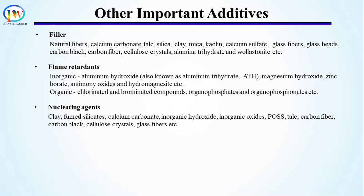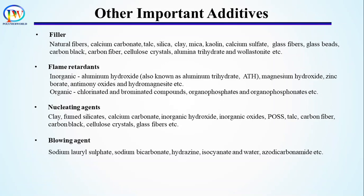Nucleating agents are added to influence the rate of crystallization and the mechanical and optical properties of polymers. Blowing agents are chemicals used to develop foamed morphology: isocyanate and water for polyurethane, azodicarbonamide for vinyl, hydrazine and other nitrogen-based materials for thermoplastic and elastomeric foams, and sodium bicarbonate for thermoplastic foams. Conductive additives help make plastics thermally or electrically conductive; common conductive fillers include carbon black, graphite, and metal particles.